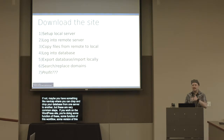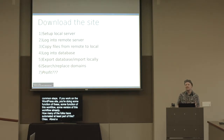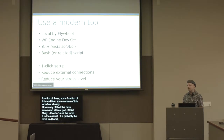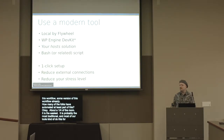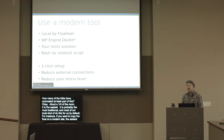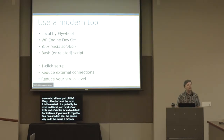About a quarter of the room has already automated at least part of this — it's the easiest and most traditional step, and most tools do this by default. For copying files on a modern site, Local by Flywheel is by far the most popular. At the end of the month, WP Engine is launching DevKit, our own tool that will allow you to clone and copy sites with full automation.